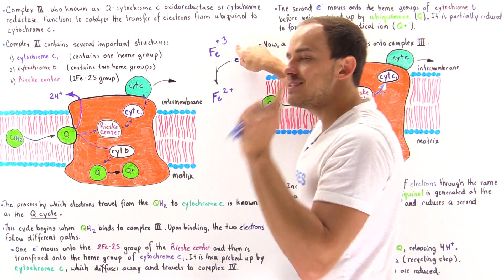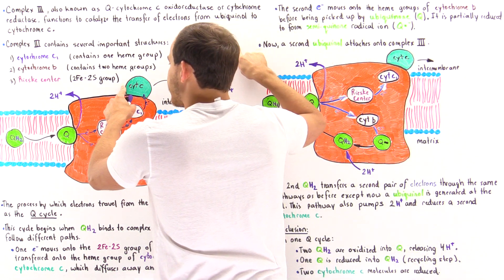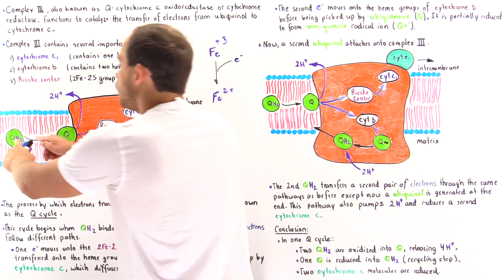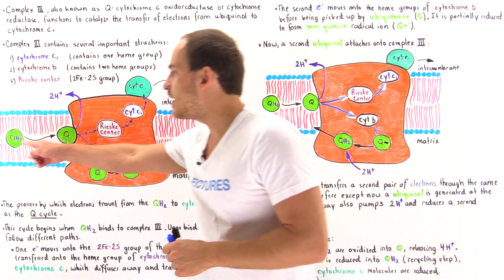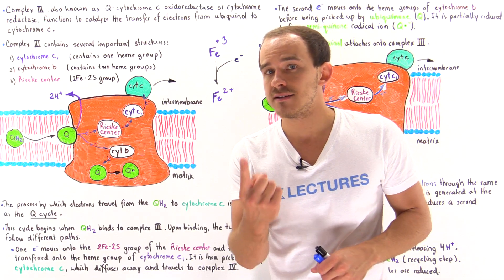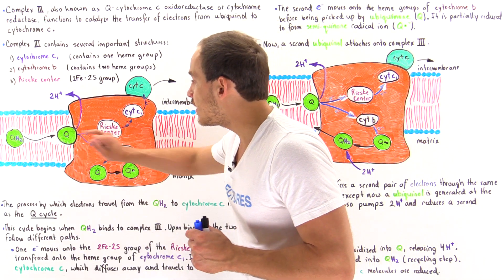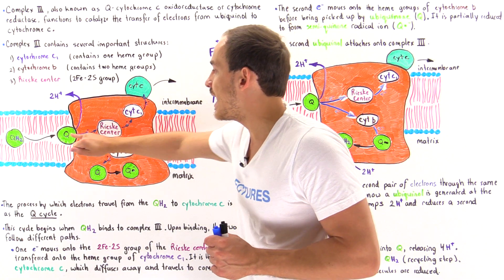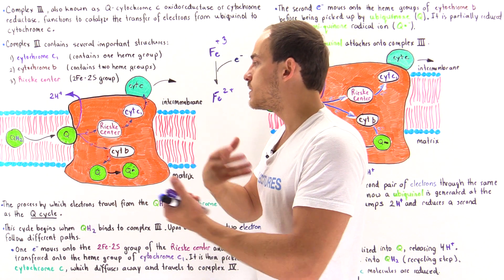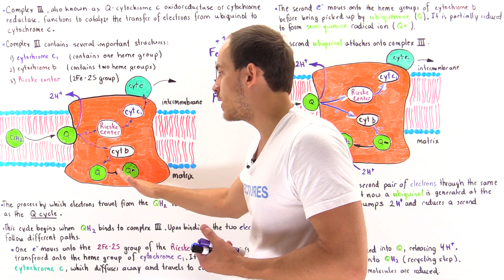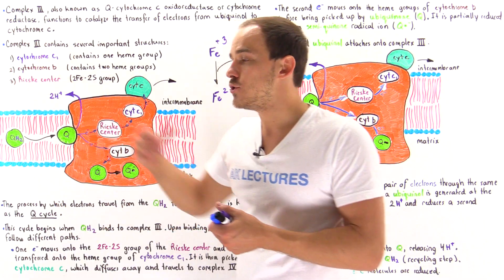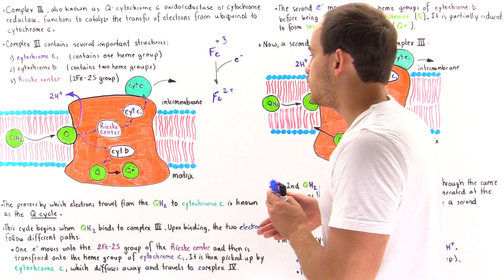Only a single electron can actually bind onto cytochrome C — this is the major difference between cytochrome C and ubiquinone as electron carriers. Ubiquinone is able to bind two electrons, but cytochrome C can only bind a single electron. That is exactly why the second electron cannot follow the same pathway; it must follow a different pathway. By following this different pathway, the second electron is recycled and used in a future process.